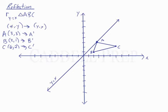So our rule is that (x,y) changes to (y,x). So we just switch the coordinates. So A is (3, 3). When we switch that, it's going to remain (3, 3). So A' is going to be the same location as A. B is (2, 1), so that's going to become (1, 2).